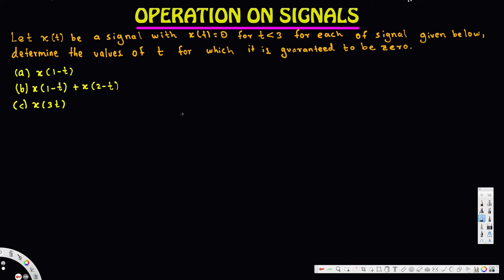Let's look at this problem. The question is asking: let x(t) be a signal where x(t) is equal to 0 for t less than 3. For each of the signals given below, determine the values of t for which it is guaranteed to be 0. So the given information is that x(t) is 0 when t is less than 3.